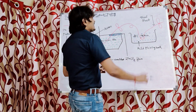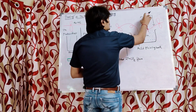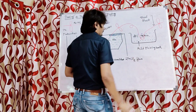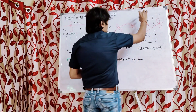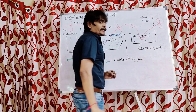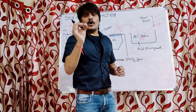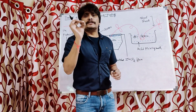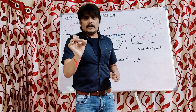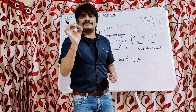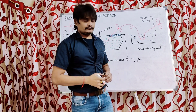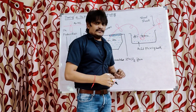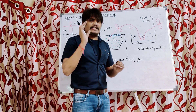Let us say that our base metal is a steel sheet. The base metal being the steel sheet means we are going to avoid or control the corrosion of the steel sheet.